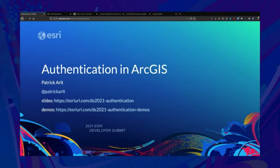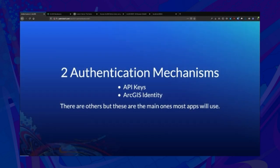Hello, I'm Patrick Arlt and this is Authentication in ArcGIS. Today I'm going to cover two of the main methods that you would use when building an application with the ArcGIS platform: API keys and ArcGIS identity. These are the two main ones I think are the most important to go over — what most applications are going to use. There are others like public keys and integrated Windows authentication, but those are more specialized, so these are the two general recommendations we make to most people when building a new application.